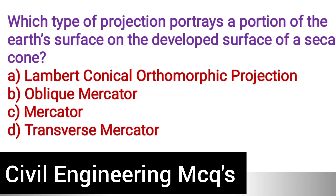Next question: Which type of projection portrays a portion of the earth's surface on the developed surface of a secant cone? Option A: Lambert conical orthomorphic projection. Option B: Oblique Mercator. Option C: Mercator. Option D: Transverse Mercator. The correct answer is option A, Lambert conical orthomorphic projection.